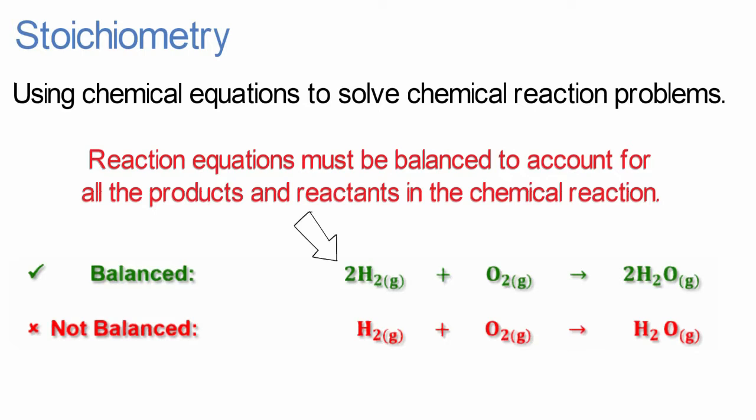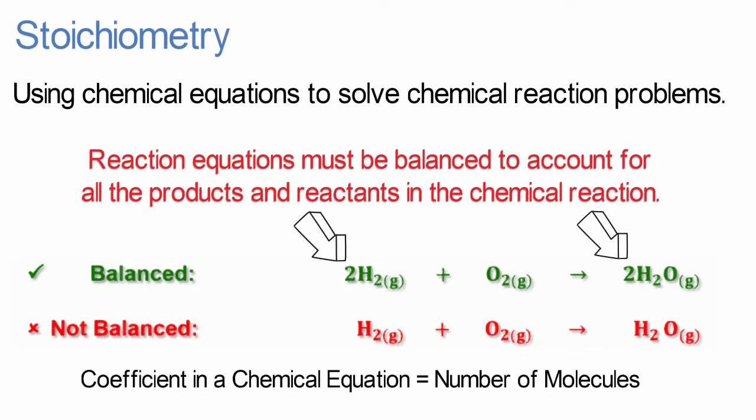Placing a coefficient of 2 in front of the hydrogen and water molecules balances the reaction equation. A coefficient in a chemical reaction indicates the number of molecules. We can now say that 2 molecules of hydrogen react with 1 molecule of oxygen to form 2 molecules of water.